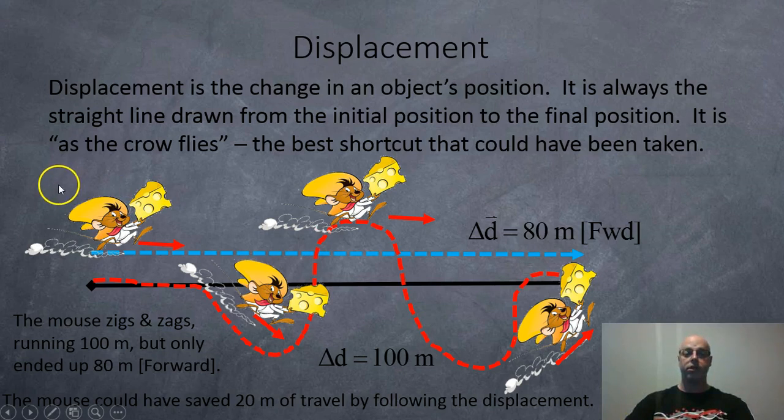Displacement. Displacement is the change in an object's position. It's always the straight line drawn from the initial position to the final position. It is as the crow flies, the best shortcut that could have been taken. So for example here we got a mouse which is zigzagging all over the place with a piece of cheese. And overall the distance is 100 meters. But the shortcut, this mouse if it had just run in a straight line it would have ended up in the same place and only would have traveled 80 meters forward. So the displacement is 80 meters forward. It could have saved 20 meters of effort just by not zigzagging all over the place.